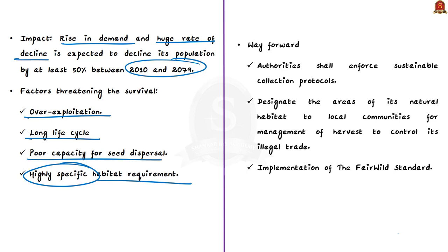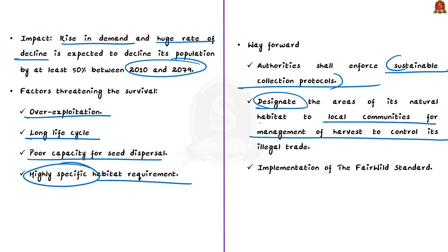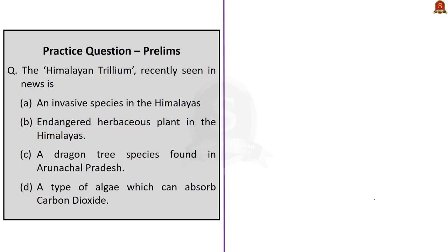As a way forward, authorities must enforce sustainable collection protocols. One suggestion is to designate the area of its natural habitat and involve local communities in the management of harvest to control illegal trade. Another suggestion is the implementation of the FairWild Standard — a set of guidelines which ensures the continued sustainable use and long-term survival of wild plant species in their habitat. In this analysis we saw about the Himalayan trillium, where it grows, the countries where it is found, the features and special facts associated with this herb, the projected decline, and the way forward.